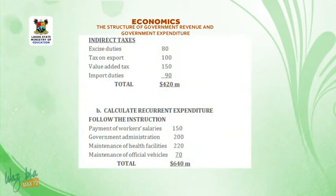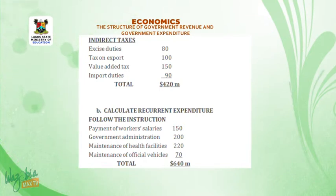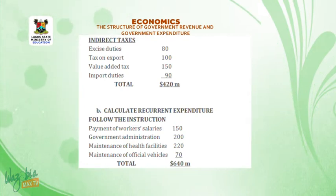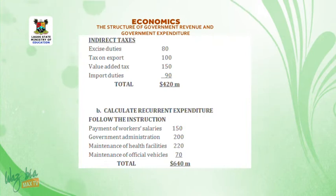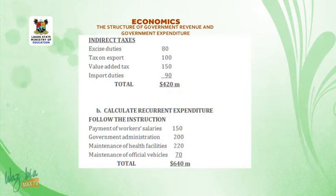For indirect taxes: excise duties 80, tax on export 100, value added tax 150, import duties 90 — total indirect taxes = $420 million. Question 2: Calculate recurrent expenditure. From the expenditure table, recurrent items are: payment of worker salaries 150, government administration 200, maintenance of health facilities 220, maintenance of official vehicles 70 — total recurrent expenditure = $640 million.